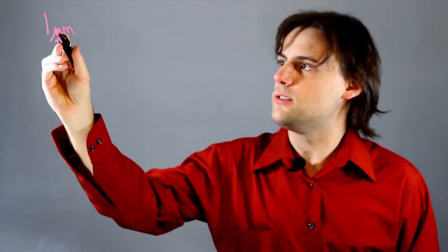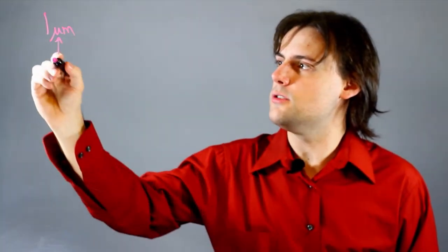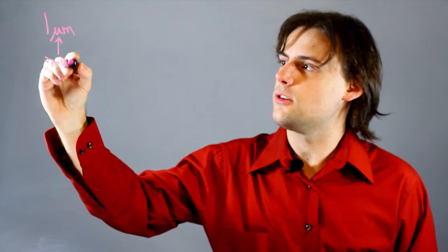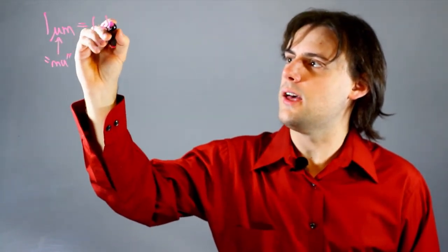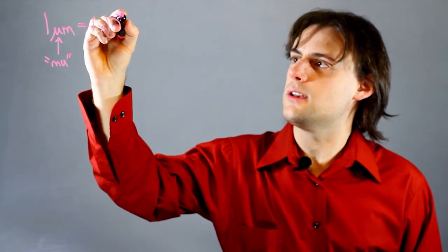One micrometer, or micron, which is denoted by this Greek letter mu, is equal to 1 times 10 to the minus 6 meters.